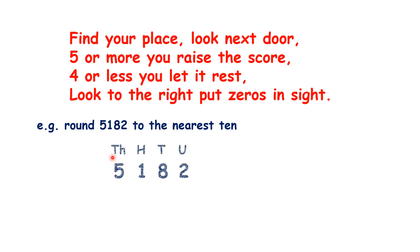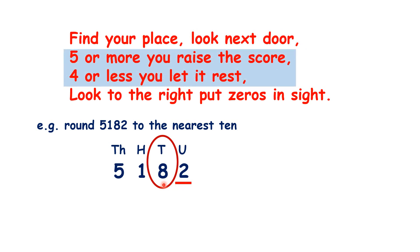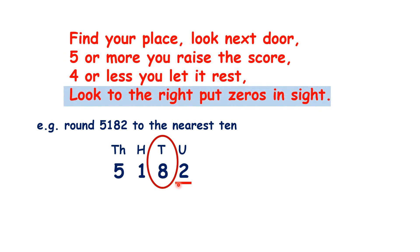Now how can we round to the nearest ten? We find our tens place, look next door at the units place, and because it's four or less — because it's only a two — we keep the tens as it is and change our units digit to zero.